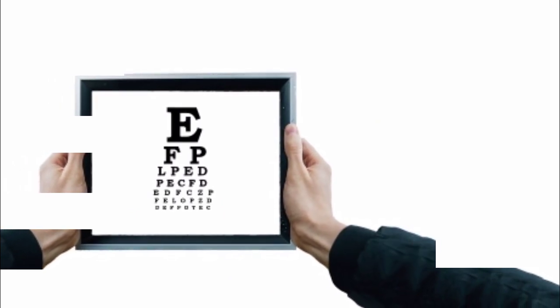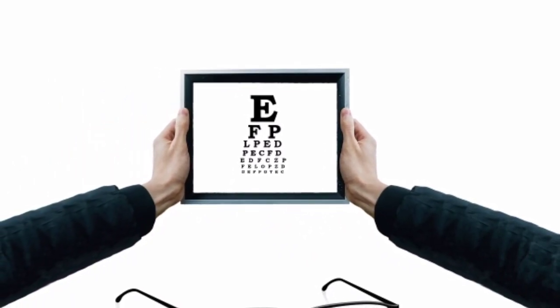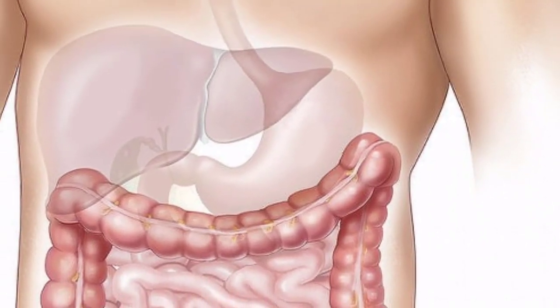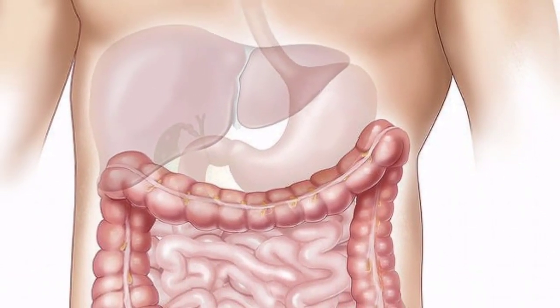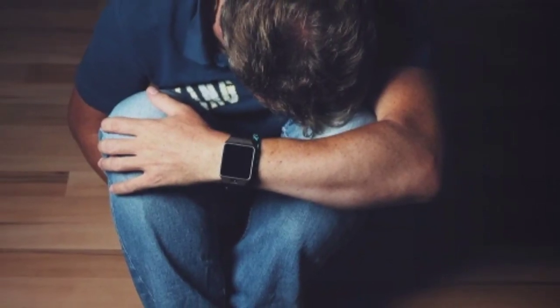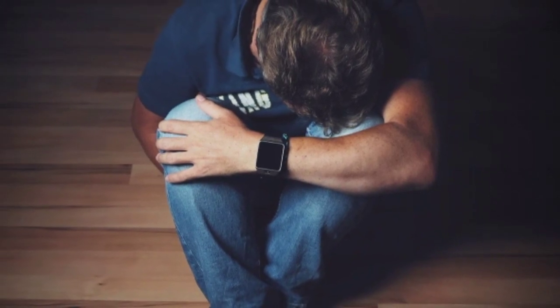Now we are going to see the contraindications. Contraindications means the situations in which we cannot give atropine. It is generally contraindicated in people with glaucoma, pyloric stenosis, and prostatic hypertrophy, except in the doses ordinarily used for pre-anesthesia.